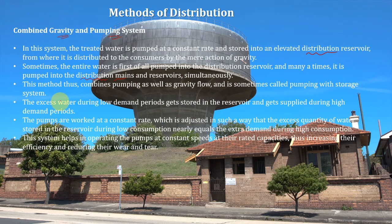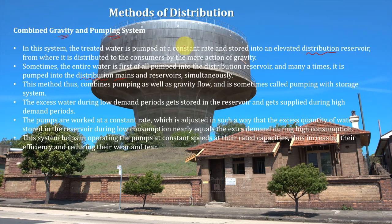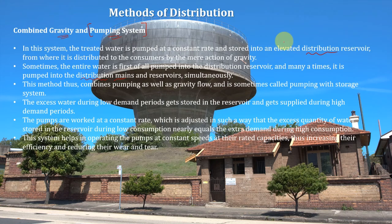This method combines pumping as well as gravity flow and is sometimes called the pumping with storage system. Excess water during low demand periods gets stored in the reservoir and supplied during high demand periods. During night time when demand is low, the pump operates at the same constant speed and same discharge, storing water. That same stored water is then used when demand is very high, so the pump does not have to vary its speed as it did in the pumping-only system.